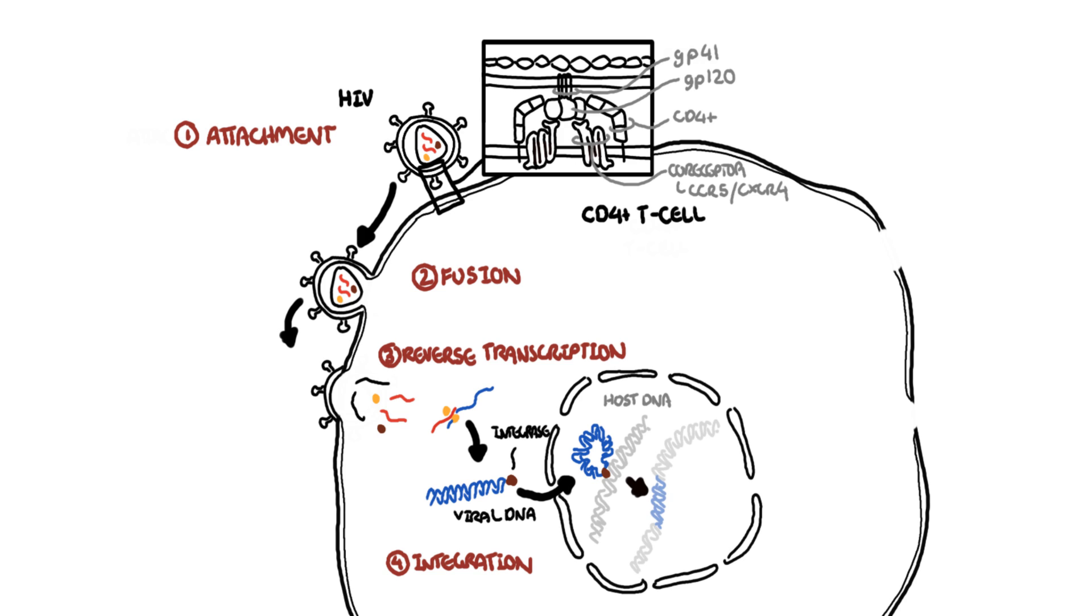The HIV virus is now part of the cell, essentially the CD4 T cell, and can use the cell's own machinery to create more of its genetic material and more of its structures in order to make more HIV viruses.